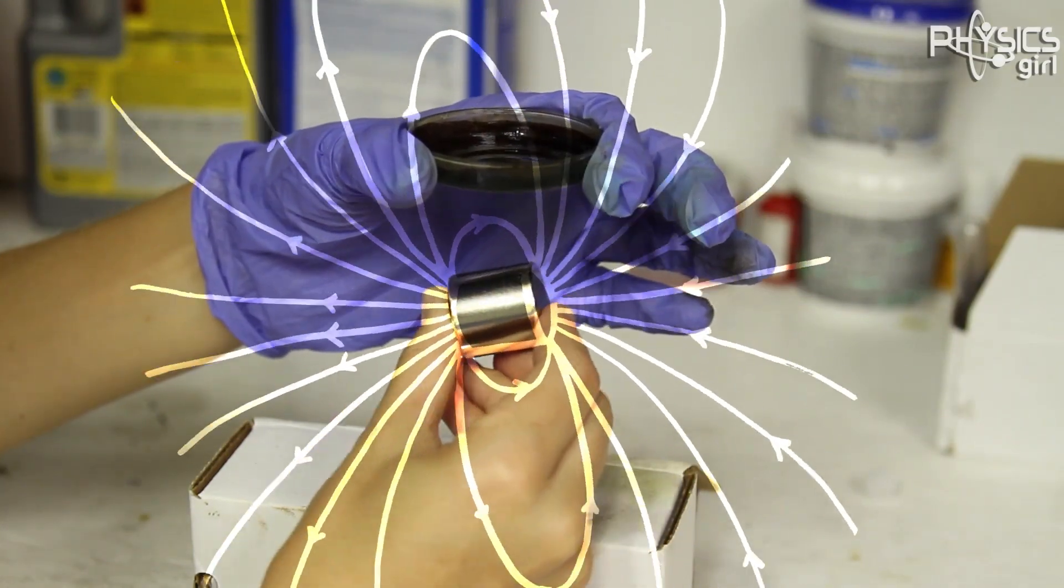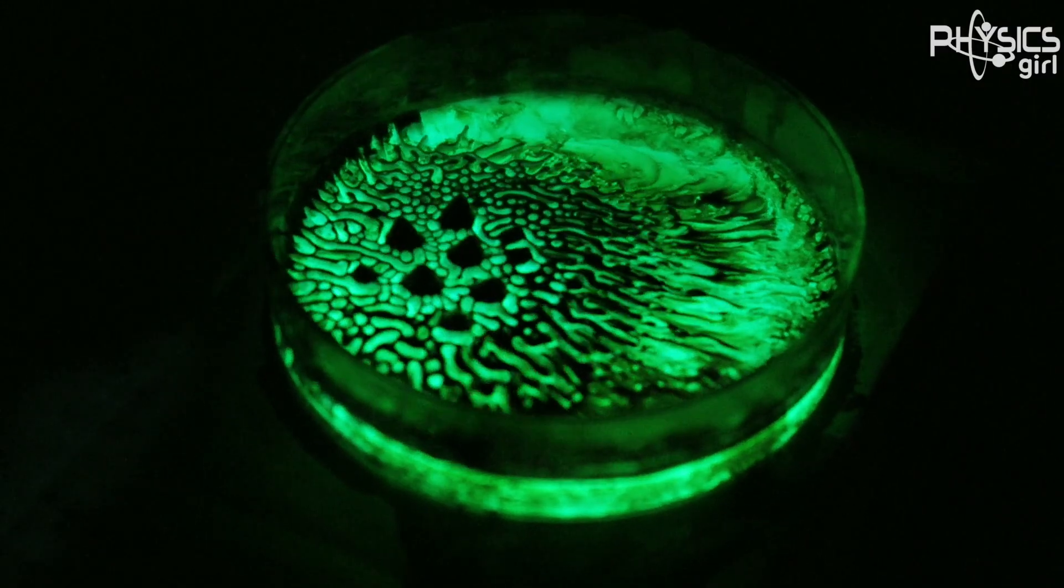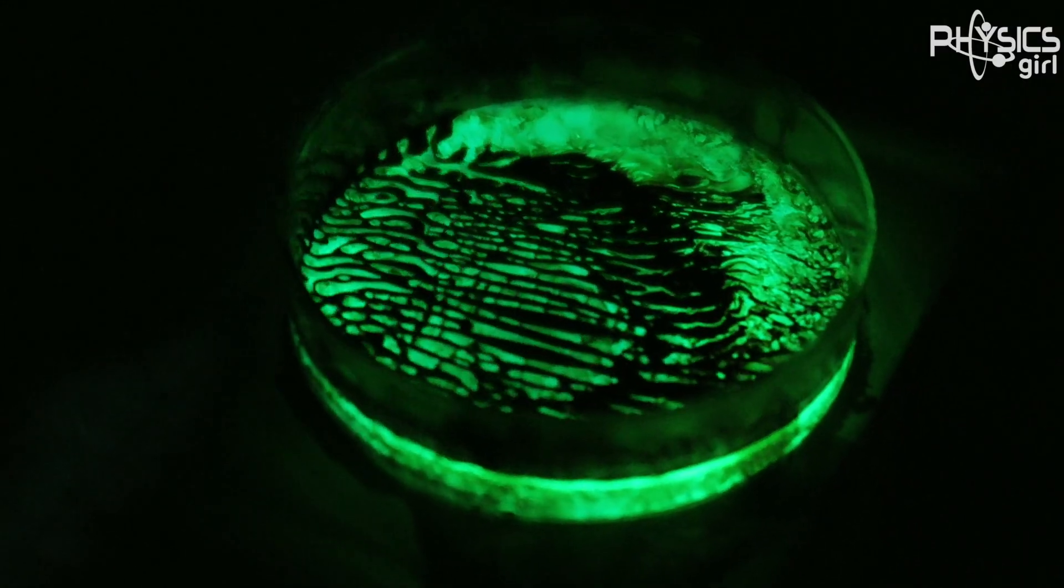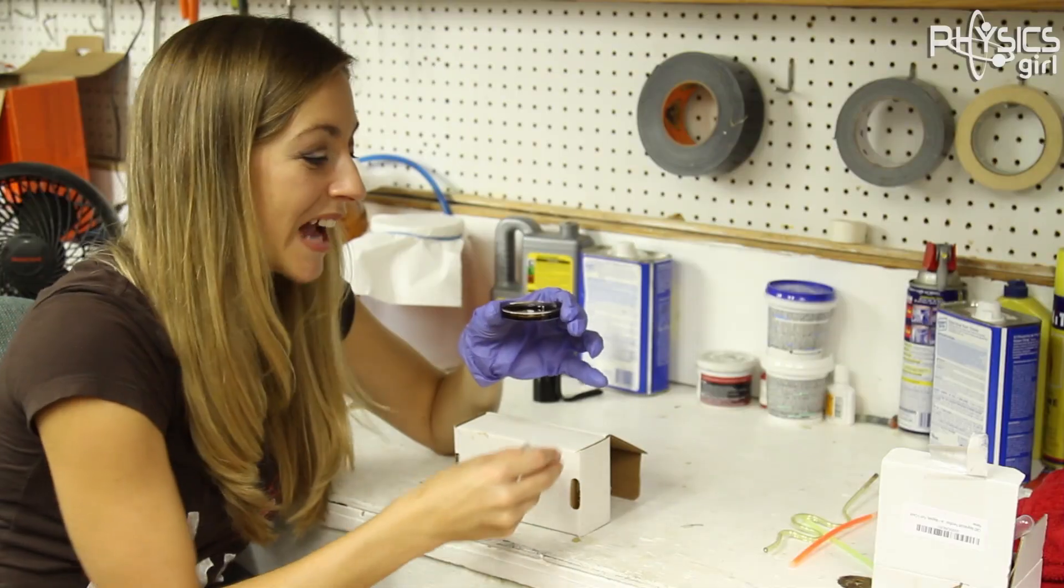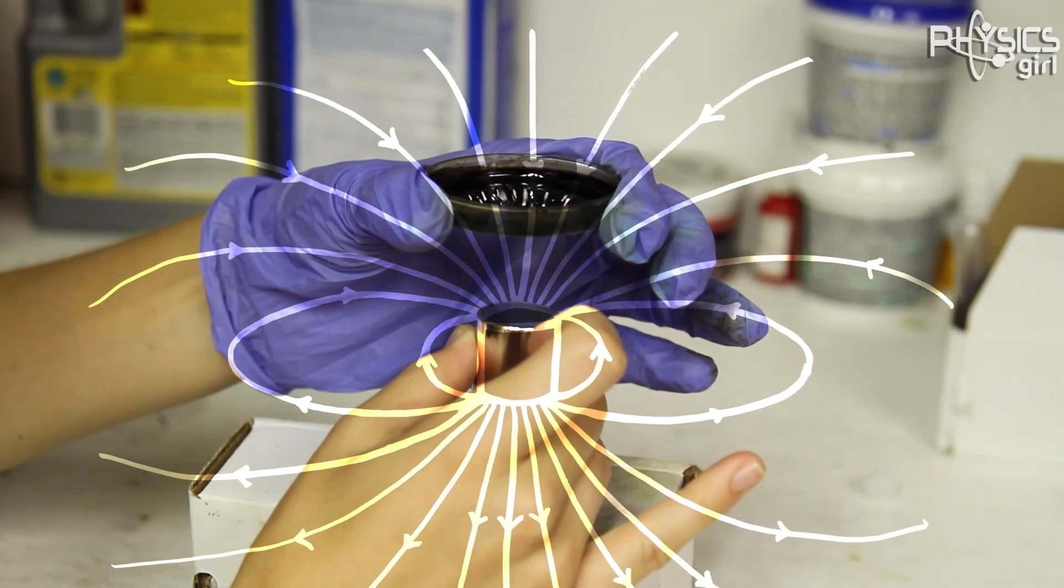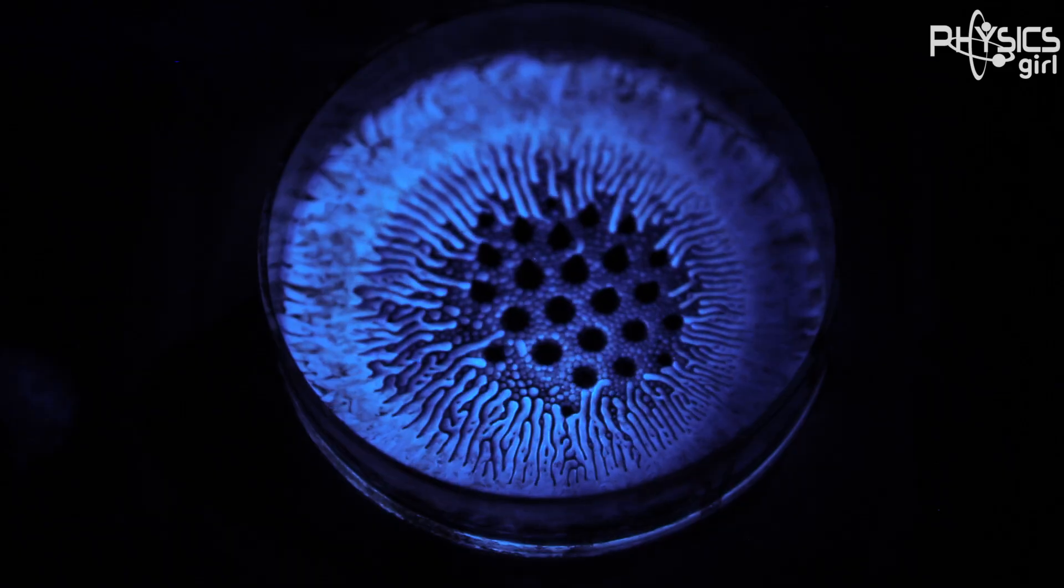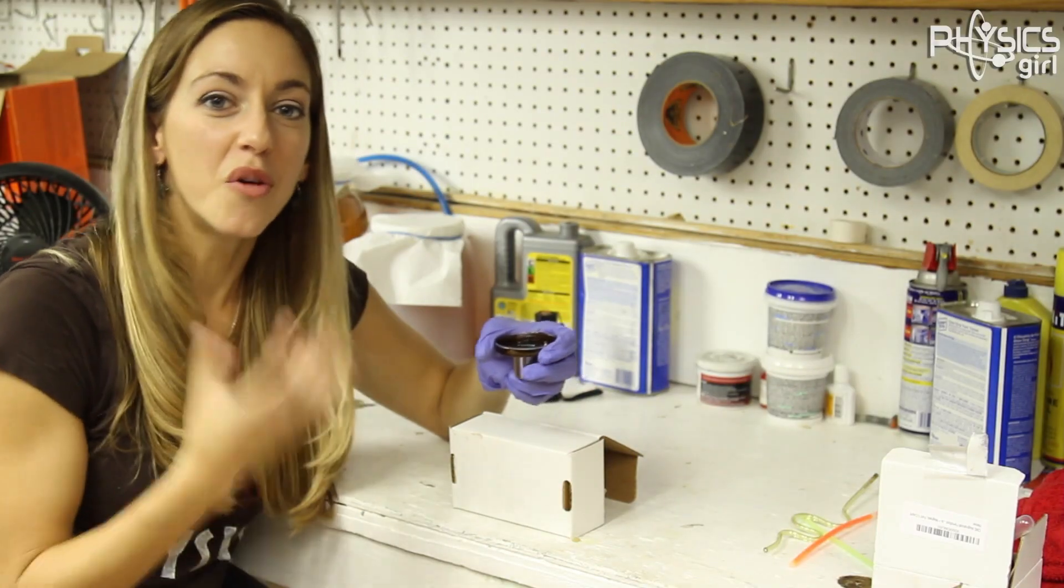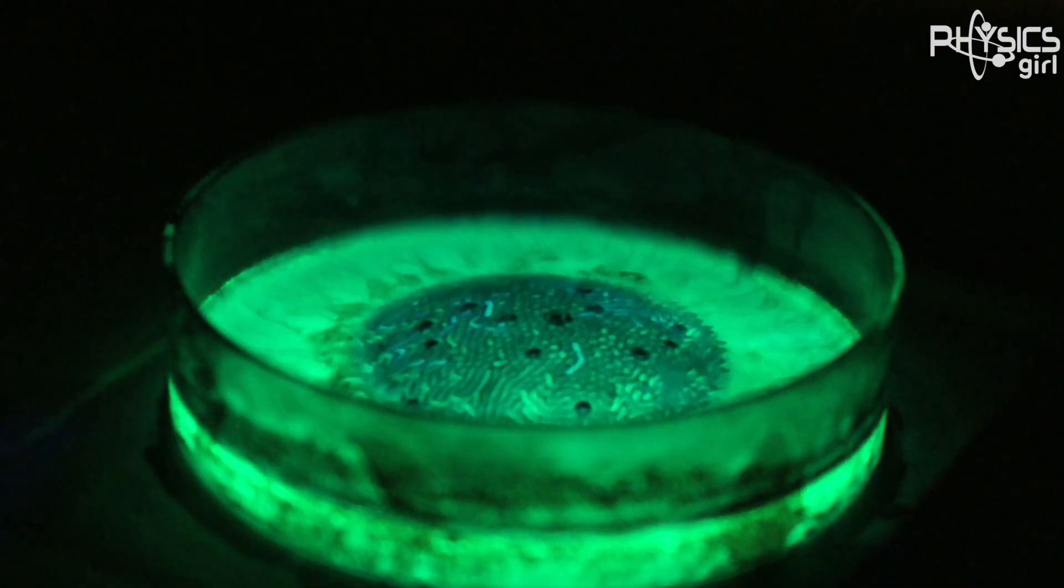The spikes follow the magnetic field lines until the field lines in the ferrofluid are horizontal and the spikes can't form horizontally. As you bring the magnet closer, you can see the strength of the field increasing, indicated by the spikes getting closer together. But why does the ferrofluid follow the magnet in the first place and why do those spikes form?